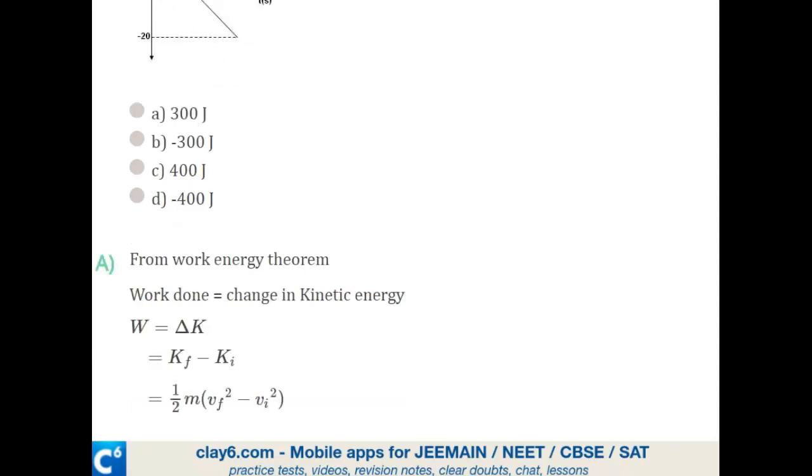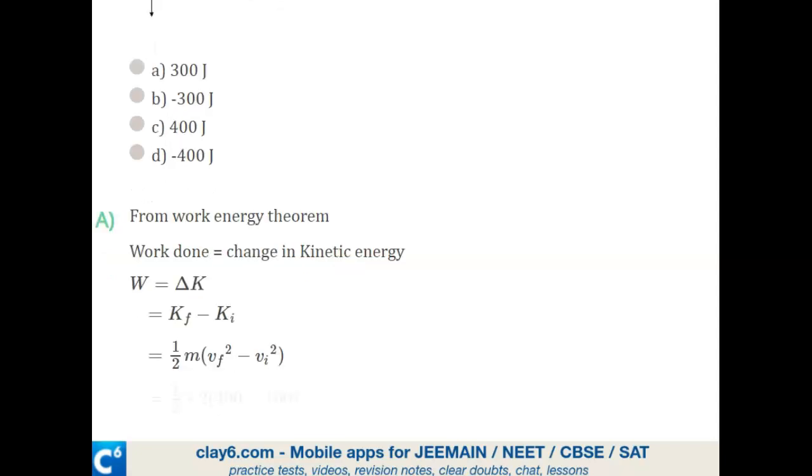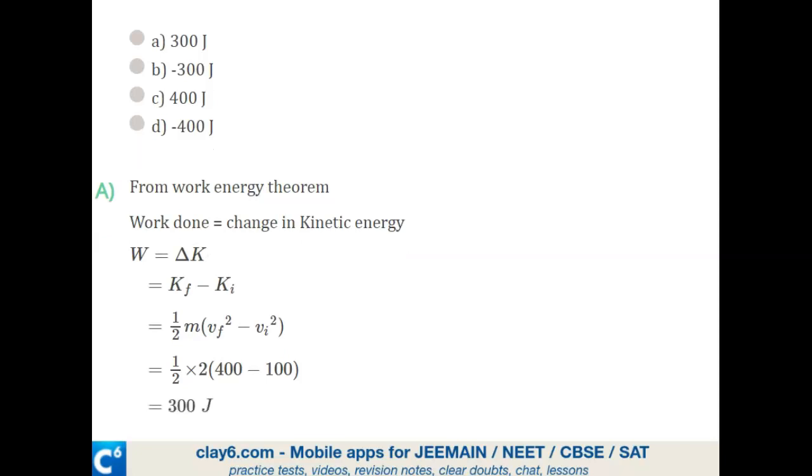The kinetic energy is half m v squared. V final is -20, so -20 squared is 400. V initial is 10, so 10 squared is 100. Mass is 2. We put everything together and we get 300 joules.